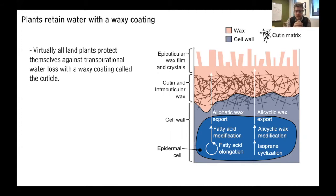You can see a diagram of the cuticle here on the slide. There is an epidermal cell here in blue — it's the epidermal cells that synthesize the components that make up the cuticle. There are a few different metabolic processes shown by these white arrows and text, relating to fatty acids as well as isoprenes. Basically, these processes inside the epidermal cells create molecules that are exported outside the cell, passing through the cell wall to accumulate on the surface of the plant.